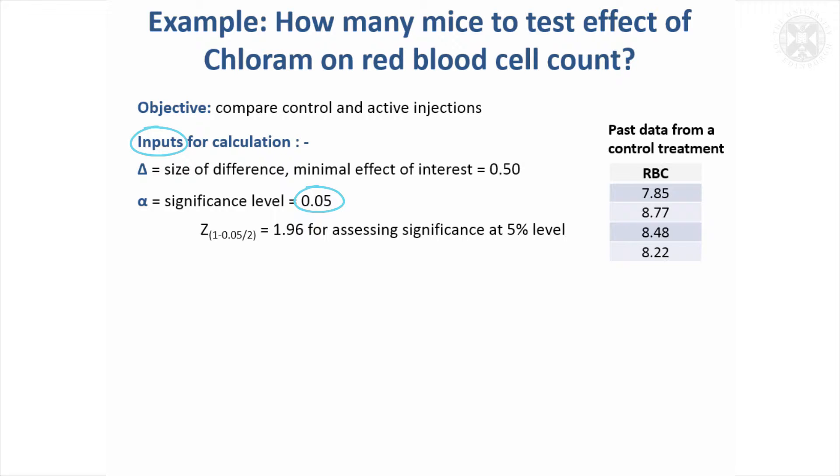We'll allow for a two-way analysis, it could go in either direction. We use Z equals 1.96. We'll use the minimum power that's considered to be acceptable, so that's 80% power. Z is going to be 0.84 for that.